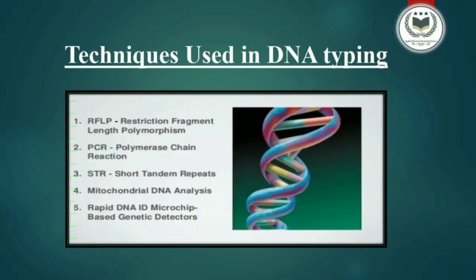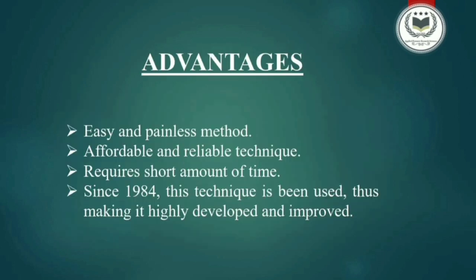Now we are seeing the major techniques used in DNA Typing. First is RFLP, Restriction Fragment Length Polymorphism. Second is PCR. Third is STR, Short Tandem Repeat. Fourth is mitochondrial DNA analysis, which is mainly used for maternity testing.